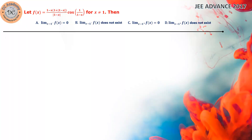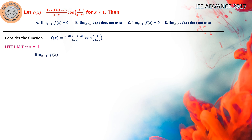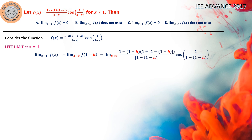First we consider the function and find the left limit at x equal to 1. So limit x tends to 1 minus of f(x) will be equal to limit h tends to 0 of f(1 minus h). Wherever we see x, we have to replace it by 1 minus h. We have to do this step very cautiously because the expansion is not straightforward.